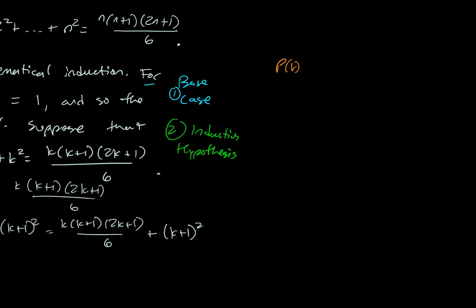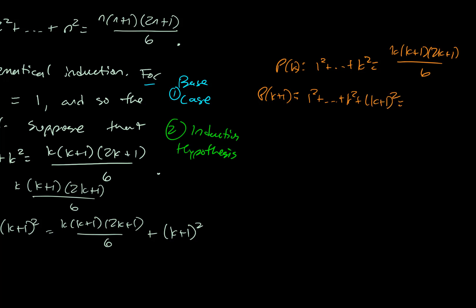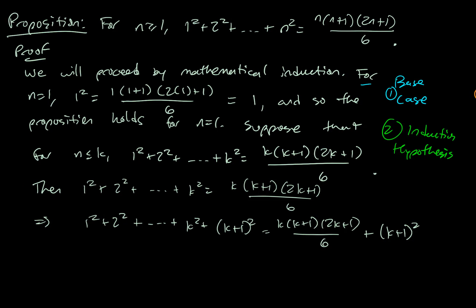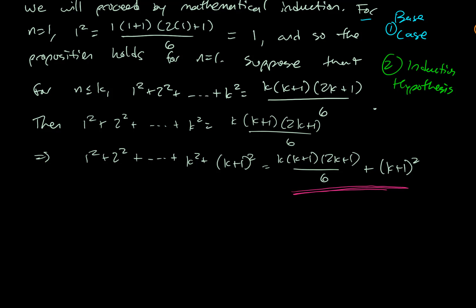It's worth going to the side and figuring out what you want, because it's not always obvious. The kth instance is 1 squared up to k squared. The k plus 1 instance would be 1 squared all the way up to k squared plus k plus 1 squared. I take my formula and replace n with k plus 1, giving me k plus 1 times k plus 2 times 2 times k plus 1 plus 1 all over 6 — and distributing the 2 might give us 2k plus 3.